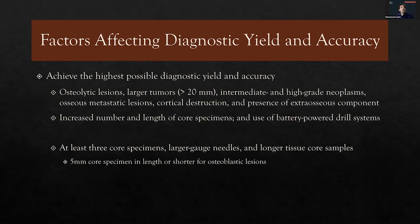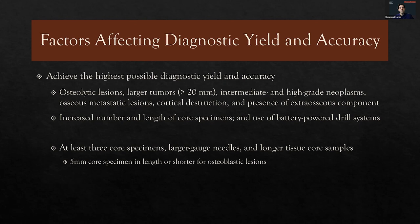In terms of achieving the highest diagnostic yield, there are many factors — some technical and some inherent to the lesion. Osteolytic lesions larger than two centimeters have higher yield. A higher number and length of core samples are associated with higher diagnostic yield. We classically try to get at least three core samples using the largest gauge needle possible.